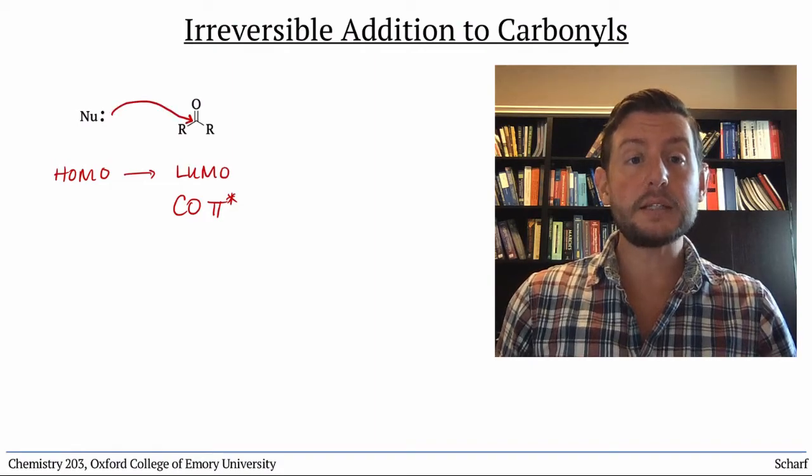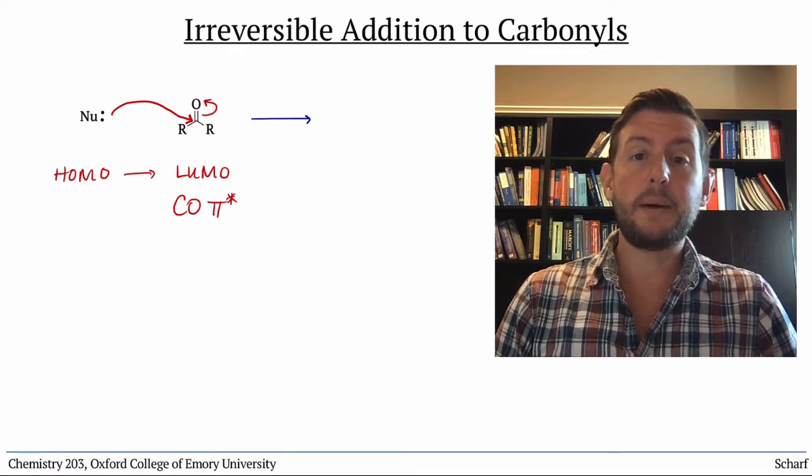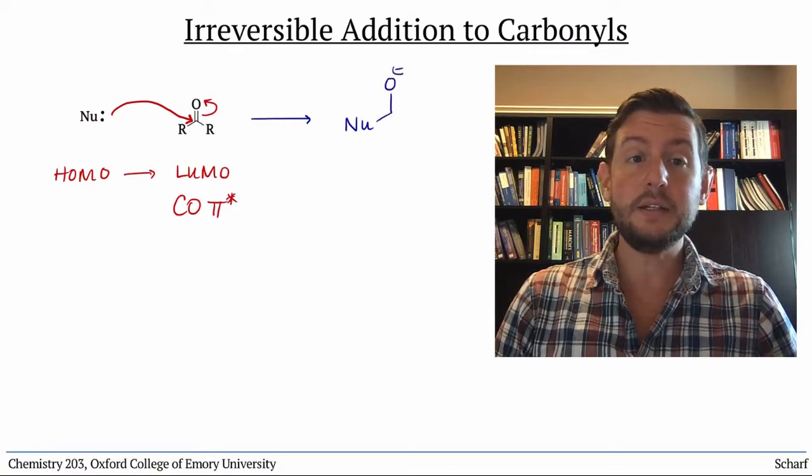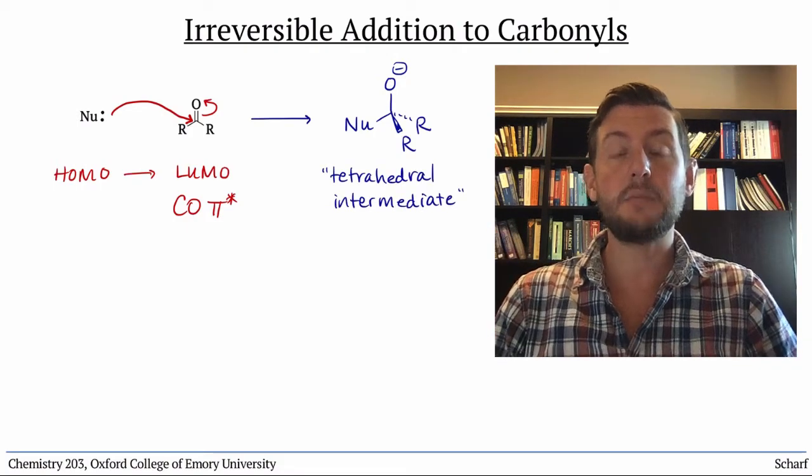This breaks the pi bond and the electrons go onto oxygen. The product of this step has a new sp3 carbon and should look familiar to you. We called it a tetrahedral intermediate in Chem 202.